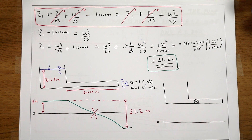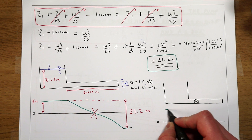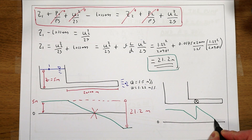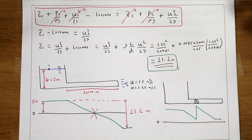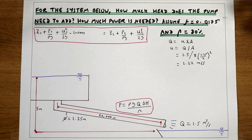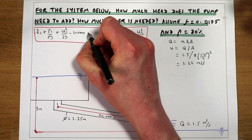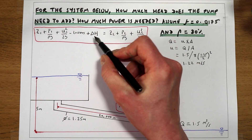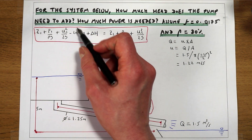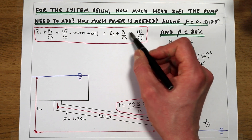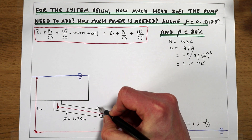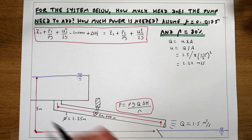With a pump, we'll start out with some initial energy level that will drop, but the pump will re-energise the system so that by the end of the pipe we have enough energy to keep the system flowing at the target flow rate of 1.5 m³/s. Going back to the original conception of the problem, we now need to add an additional component to Bernoulli's equation — a delta H term representing the energy added by the pump.